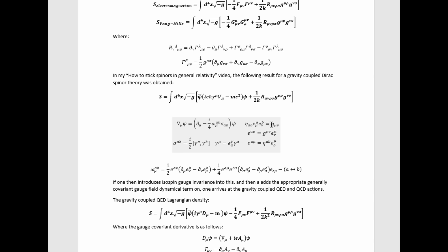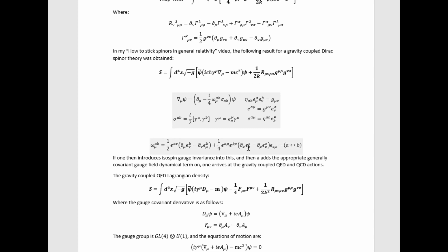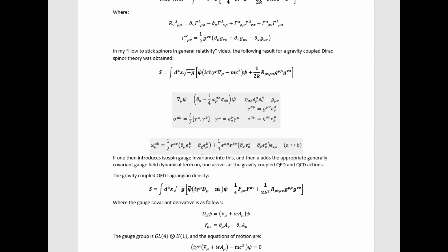Then we have this relationship between the tetrad and the metric, which establishes what the tetrad is in terms of the metric. And we have this formula in terms of the tetrad and derivatives of it for the spin connection.